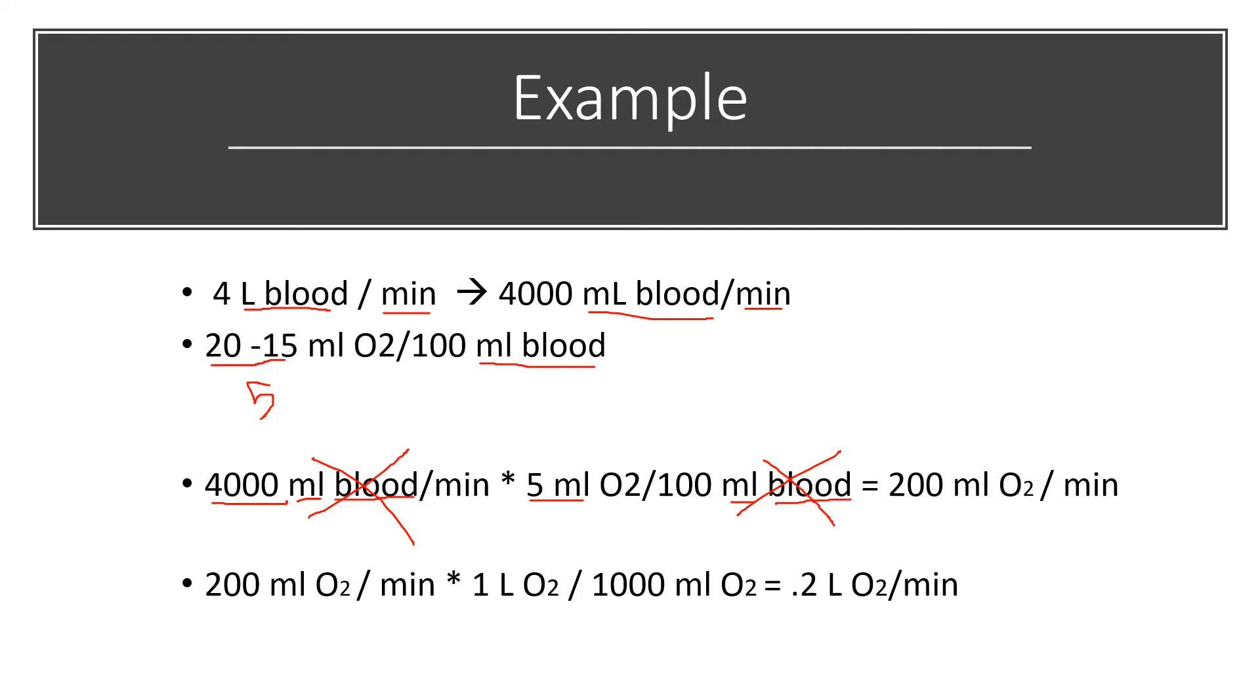This leaves us with 4,000 times 5 milliliters of O2. That would give us about 20,000 milliliters of O2 per 100 milliliters.